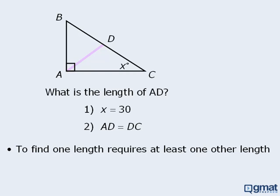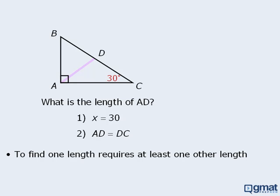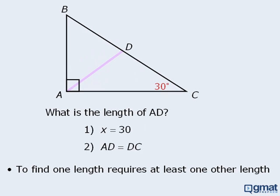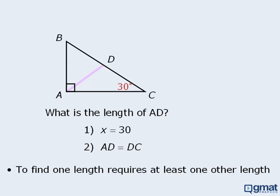In this question, we want to find the length of side AD, so we want to determine whether the statements force this side into having just one length. Statement 1 tells us that x is 30, so this angle is 30 degrees. Does this information force side AD into having only one length? No. We can take the figure and make it larger while still maintaining the angles, so the angles remain the same but the length of side AD changes. Since statement 1 does not force side AD into having just one length, statement 1 is insufficient.